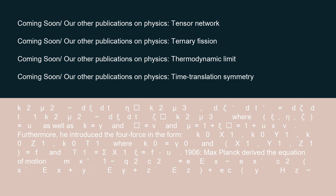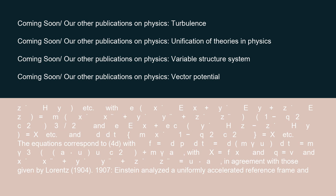1906: Max Planck derived the equation of motion m·x″·(1 − q²/c²) equals E_x − (x′·E_x + y′·E_y + z′·E_z)/c² plus E_c·(y′·H_z − z′·H_y), with E_x·x′ + y′·E_y + z′·E_z equals m·(x′·x″ + y′·y″ + z′·z″)/(1 − q²/c²)^(3/2), corresponding to F equals dp/dt equals d(m·gamma·u)/dt equals m·gamma³·(a·u·u/c²) + m·gamma·a, with x equals f_x and q equals v. The equations are in agreement with those given by Lorentz, 1904.